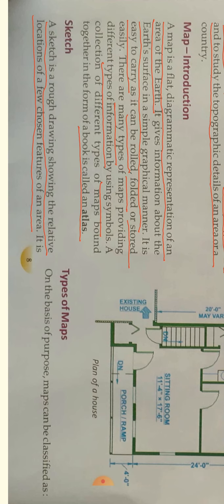A map is a flat diagrammatic representation of an area of the earth, giving information about the earth's surface in a simple graphical manner. Maps are of different types that provide different types of information by using symbols. An atlas is a collection of different types of maps bound together in the form of a book. We will continue the remaining part of the lesson in the next video.